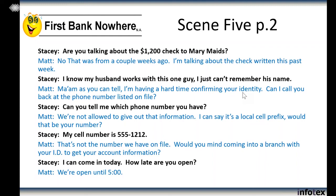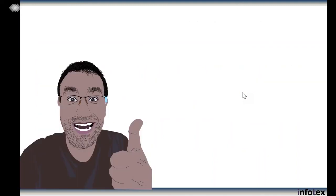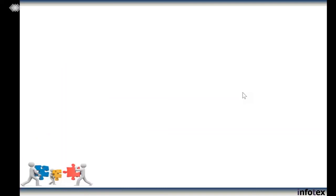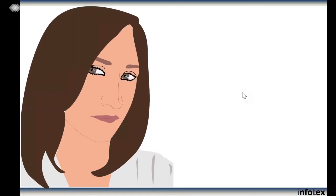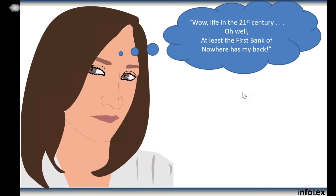Dan: I feel like this is a good scene that addresses a lot of the issues. Additional scenes that might need to be exercised would be a loan customer calling who doesn't have a deposit account, that sort of thing. Matt definitely looks like somebody going somewhere — good job, Matt. I definitely appreciate you joining the webinar today, and I again thank you for volunteering. We need to get that lunch in sometime this year. Matt: Sure, just get at me on Slack and we can work it out. Dan: I wonder what Stacy the customer looks like right now, because she has to come into the branch. Stacy: Wow, life in the 21st century. Oh well — at least the First Bank of Nowhere has my back.